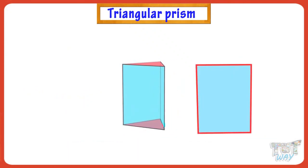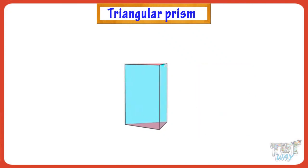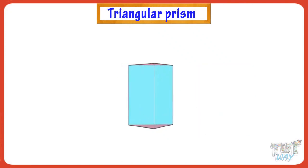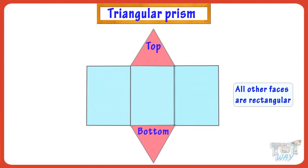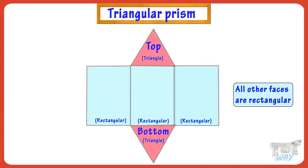Let's open it to see the shape of net it forms. This is the net of a triangular prism. If we cut open a 3D shape, we get all its faces. So in this net we have two triangular faces and three rectangular faces.